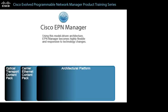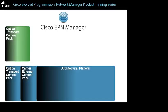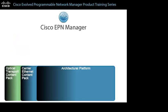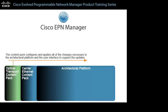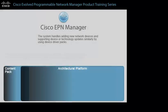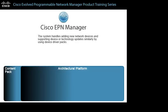Using this model-driven architecture, EPN Manager becomes highly flexible and responsive to technology changes. When a technology-specific update is necessary, the update occurs only to the applicable content pack, and when an update happens, the content pack configures and applies all of the changes necessary to the architectural platform and the user interface to support the updates. The system handles adding new network devices and supporting device or technology updates similarly by using device driver packs.